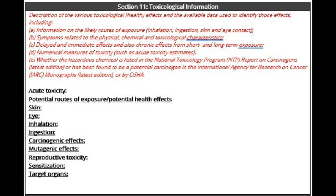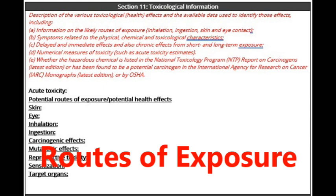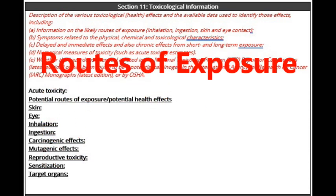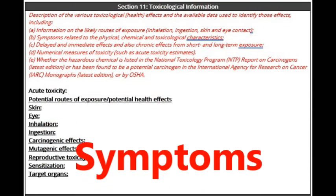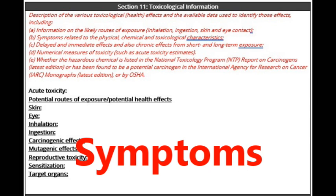Let's start with line one: information on the likely routes of exposure — whether it's inhalation, ingestion, skin, or eye contact. In short, how does it get in you? Breathing, cuts in the skin, absorbed through pores, eyes, or do you need to ingest it through your mouth? The next line covers symptoms related to physical, chemical, and toxicological characteristics.